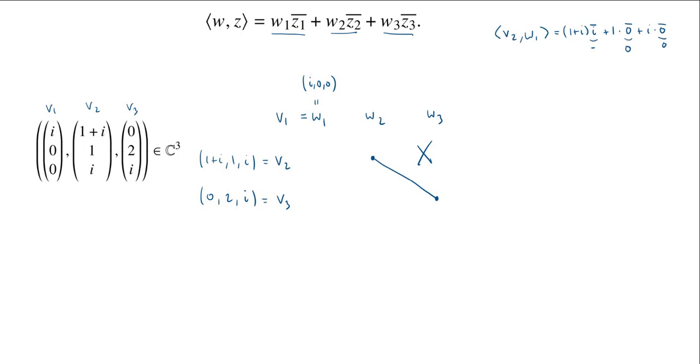Let's start with i times i bar. i bar is negative i, and i times negative i is 1. Then I have 1 times negative i, so I get 1 minus i. That's my inner product. Next, V3 with W1: 0 times i bar, 2 times 0 bar, i times 0 bar just adds up to 0. Cool.